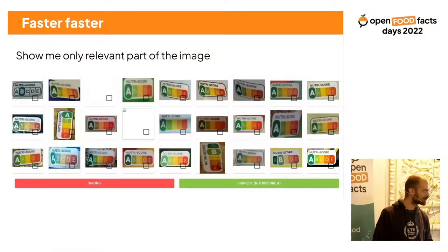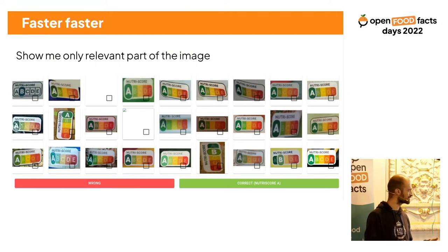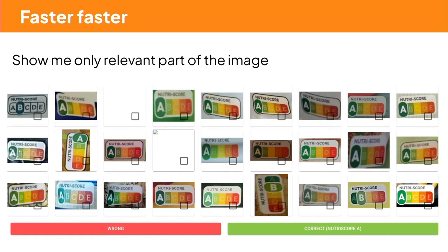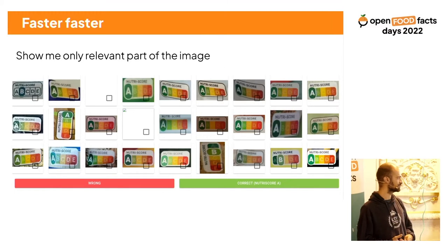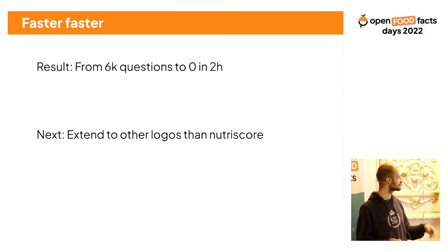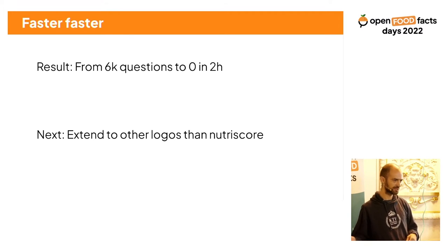NutriScore is not always easy, so we made a kind of mixing between fast annotation and the logo game. The idea is that you only see NutriScores, which makes it super fast to annotate. For example, you can say from this image to the end of the row it's all good — just two clicks and you annotate 10 pictures. I built this for my own usage at the beginning. When I started, there were 6K questions about NutriScore; I took an hour with this tool and it was over.